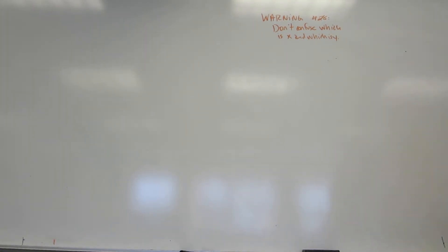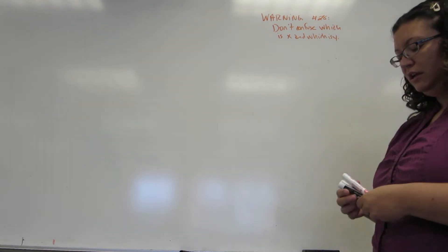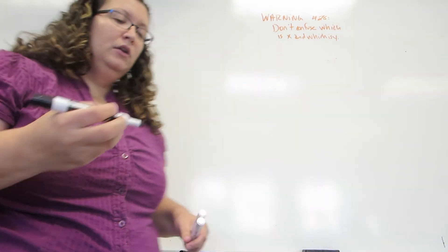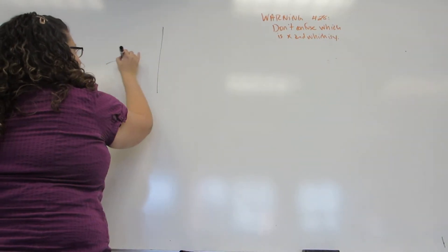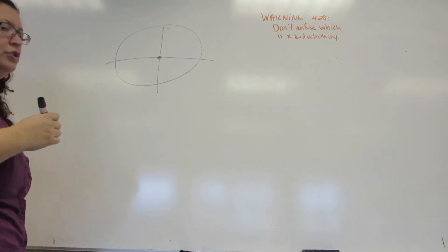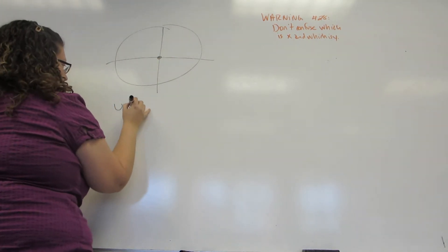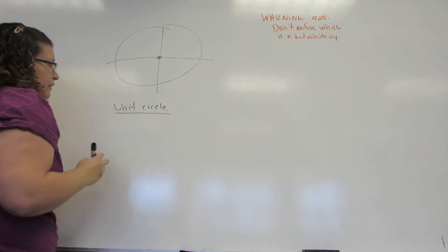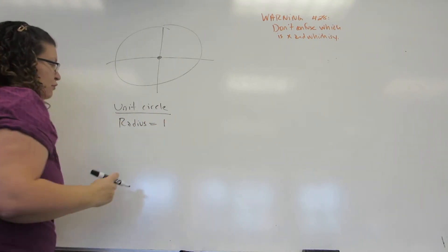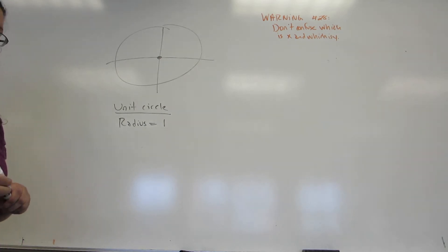Previously, we've defined the trigonometric functions based off of acute right triangles, and then we learned how to define them based off of a point defined in the plane. But what we really need is a way to define the trigonometric functions for any angle possible. So we're going to look at a very special circle whose center is the origin, called the unit circle. 'Unit' is a fancy way of saying one, because the radius of this circle is always going to be one, and that's going to simplify our calculations considerably.